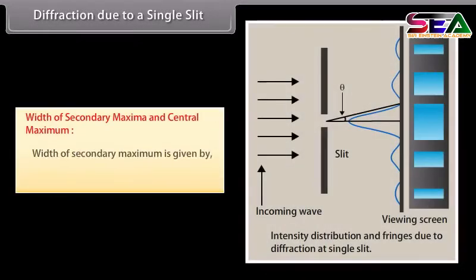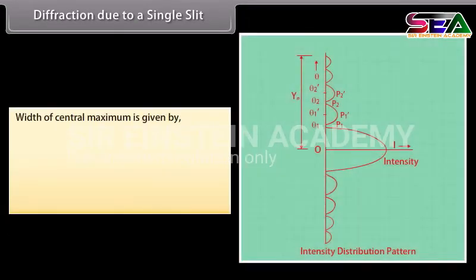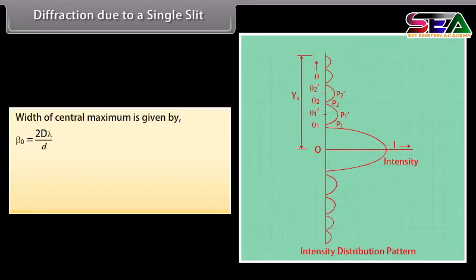Width of secondary maximum is given by beta equals D lambda upon small d. Width of central maximum is given by beta naught equals 2D lambda upon small d. A distinct diffraction pattern is possible only if the slit is narrow. If the slit is made sufficiently large, then the secondary maxima will not be visible.